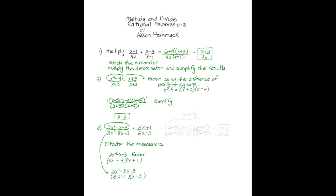Now let's put this all back together. We have two x minus three times x plus one over three x plus one times x minus three, multiplied by three x plus one over two x minus three. Notice the second numerator and denominator did not factor further. We simplify by cancelling matching factors: two x minus three and three x plus one both go to one. Our final answer is x plus one over x minus three.